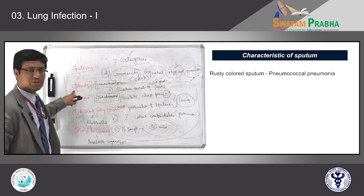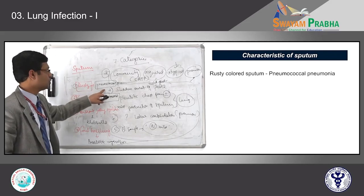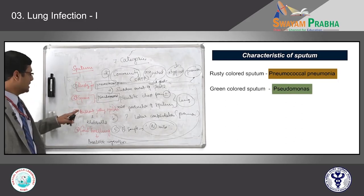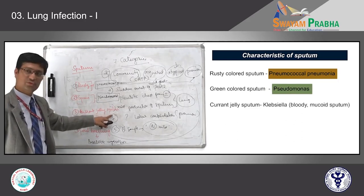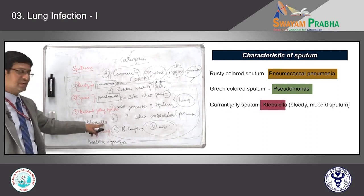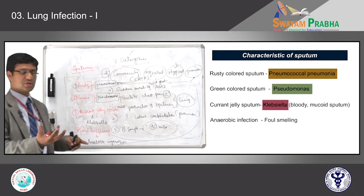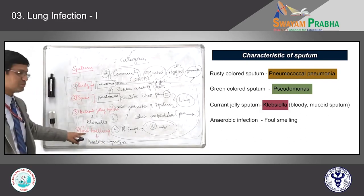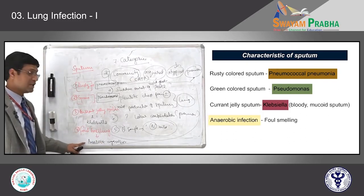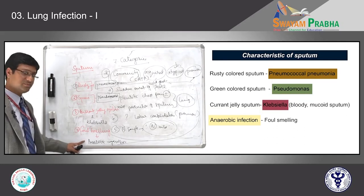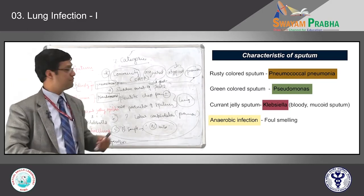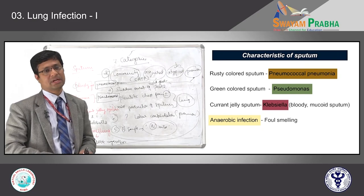To summarize sputum characteristics: rusty colored sputum — pneumococcus; green colored sputum — Pseudomonas; current jelly sputum — Klebsiella; foul-smelling sputum — anaerobic organisms. By looking at the sputum, you can presume the causative organism and treat with appropriate antibiotics immediately without waiting for culture and sensitivity. These are important things to remember in pneumonia. The further categories of pneumonia will be taken up in the next class.